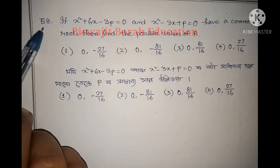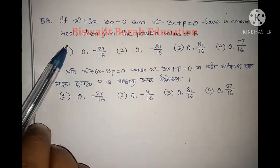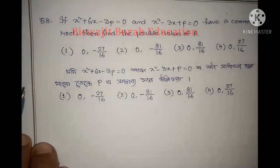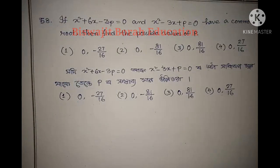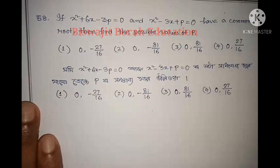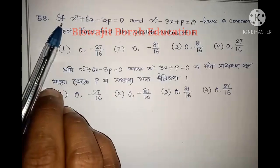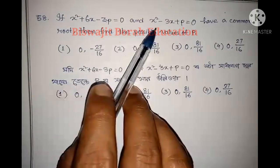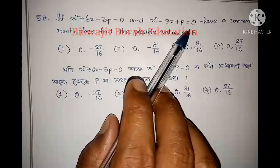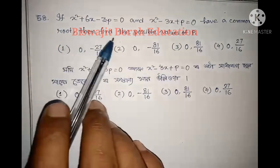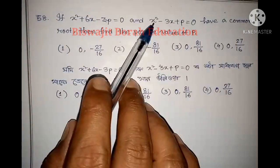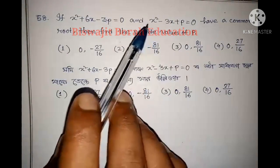In this video, I will introduce you to the 58 numbers. If x squared plus 6x minus 3p equals 0 and x squared minus 3x plus p equals 0 have a common root, then find the possible values of p. This is a quadratic equation with a common root.